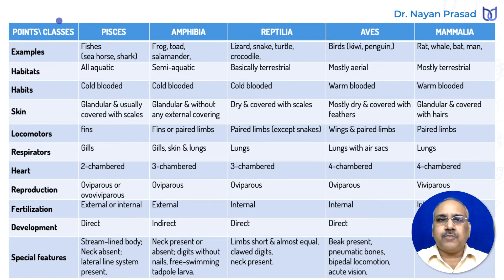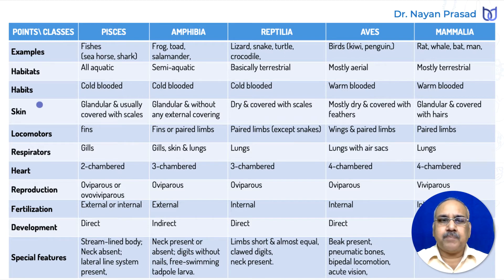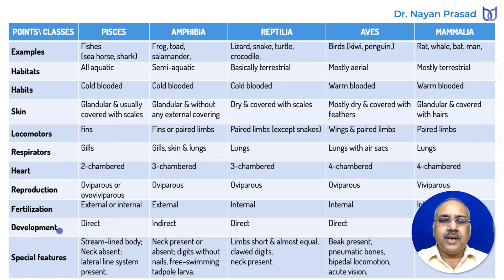We can discuss the features of these different groups under certain points. First, you must remember the examples of these different groups. Then we can discuss their habitats, habits, skin, locomotory structures, respiratory structures, heart — the part of the circulatory system — reproduction, mode of fertilization and development. And lastly, you must remember the special features found in each particular group.